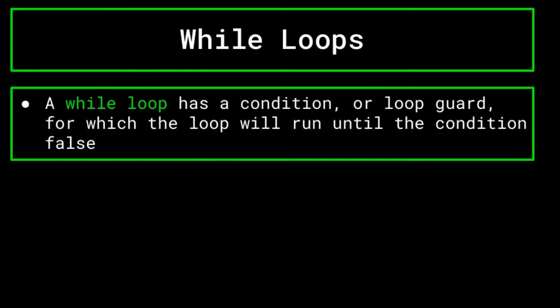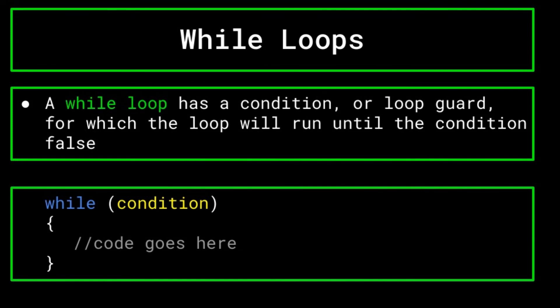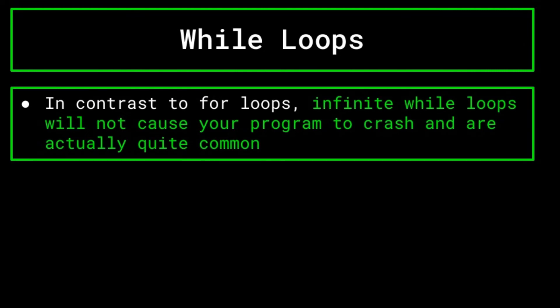Next up we have the while loop. A while loop has only one part — a condition — and it continually carries out the instructions within its body so long as the condition is true. Its condition can be a boolean variable, meaning the loop will run as long as the variable is true, or if some integer is greater than another integer, or anything else, so long as the statement evaluates to either true or false. In contrast to for loops, you do not have to set the condition such that it will eventually return false. It is quite okay, and relatively common, to create an infinite while loop that will run as long as the program is running, simply repeating the instructions without crashing. An infinite while loop can be created quite simply by writing while true.